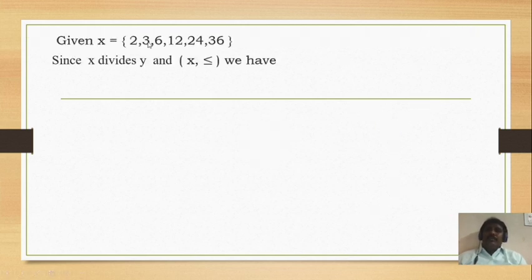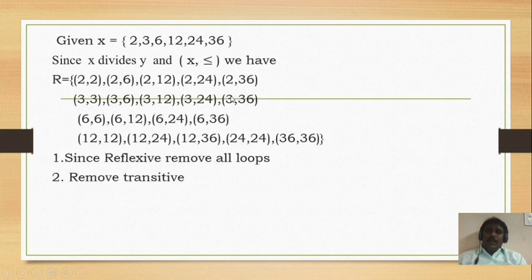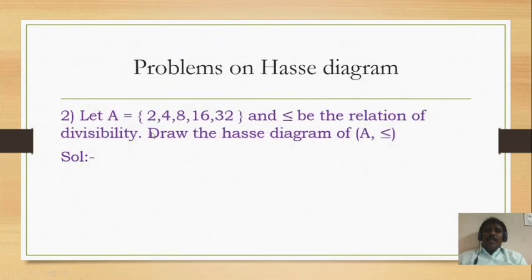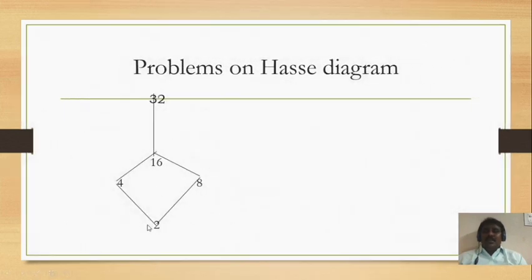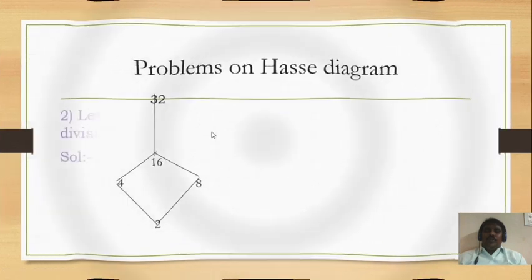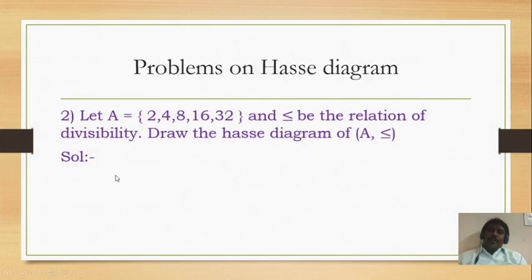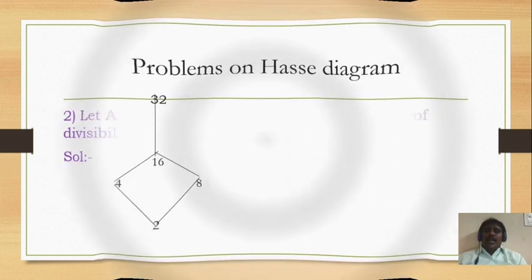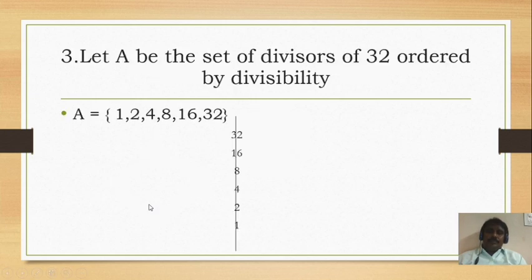Next, another example: Let A = {2, 4, 8, 16, 32} and ≤ be the relation — poset means ≤ and divisibility. Draw the Hasse diagram. First, the values 2, 4, 8, 16, 32. We follow the same conditions: check the poset — RAT: reflexive, anti-symmetric, and transitive. We remove the reflexive, then remove the transitive, then remove the self-loops and arrows. At last, we get the Hasse diagram for this problem.